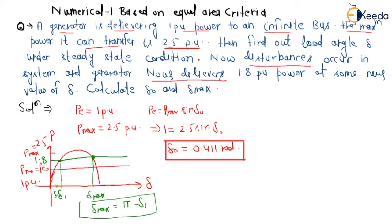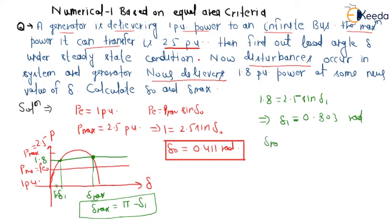The task is to calculate the value of delta_1. From the graph, 1.8 = 2.5 * sin(delta_1), since it is on the same electrical graph. So 1.8 = 2.5 * sin(delta_1), giving delta_1 = 0.803 radian. Therefore delta_max = pi minus delta_1 = pi minus 0.803 = 2.336 radian. This is the gateway question for all the tougher questions.